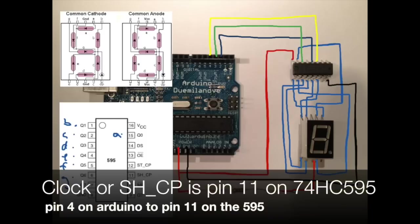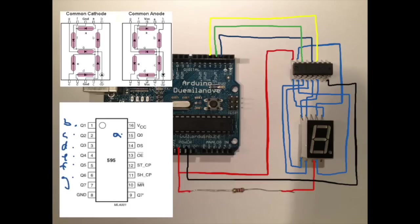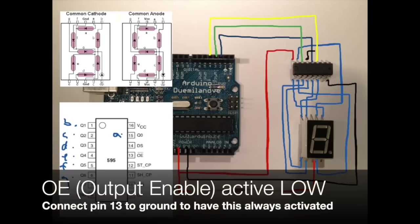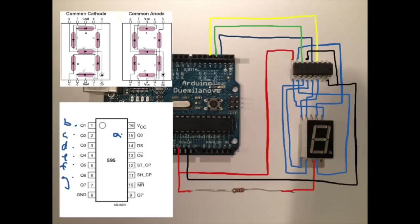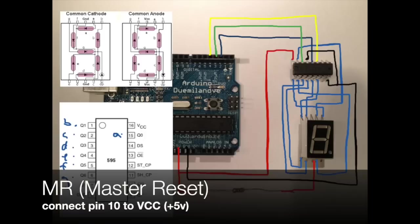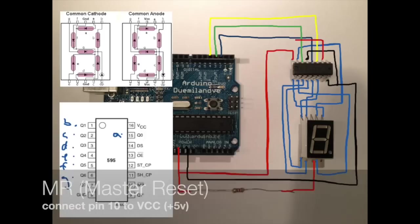Pin four is going to be the clock pin connected to SHCP or pin 11 on the 595. We also need to do some local connections on the 595. We need to connect the OE pin 13 to ground. OE stands for output enable, and output enable is active when this pin 13 is low, so it's always enabled when we do this. You can turn it on and off but it's easier to do it like this.